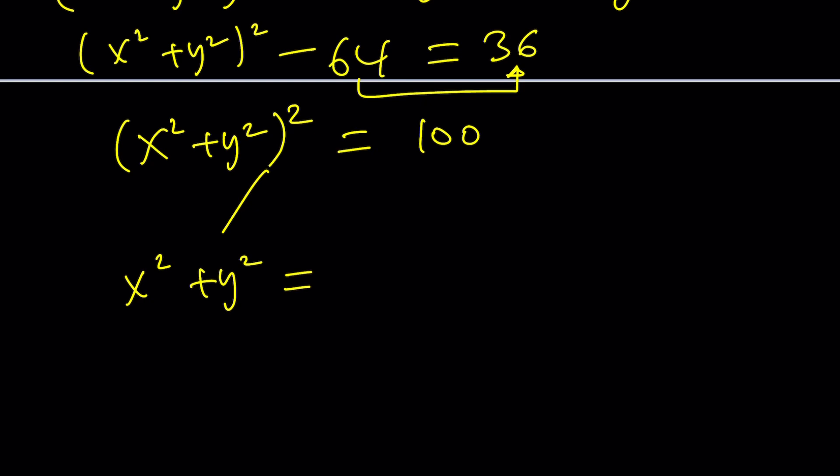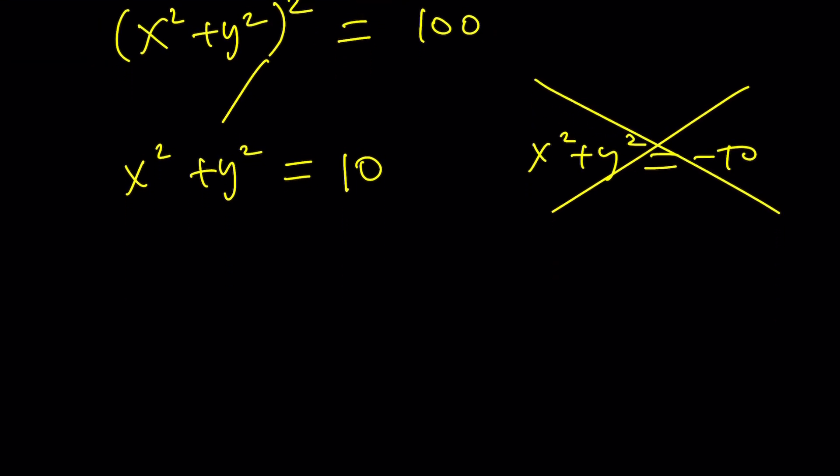So since x and y are real, x squared plus y squared cannot be negative 10. Make sense? Let me make that clear. It can't be negative 10.